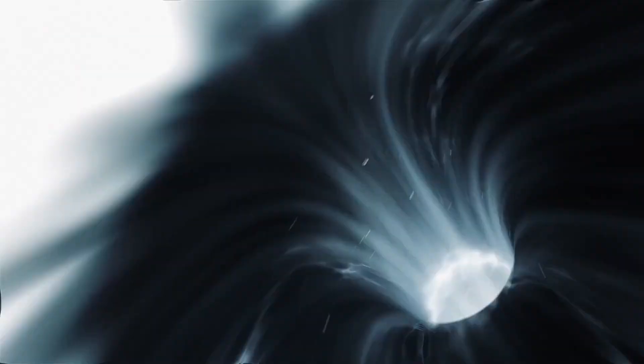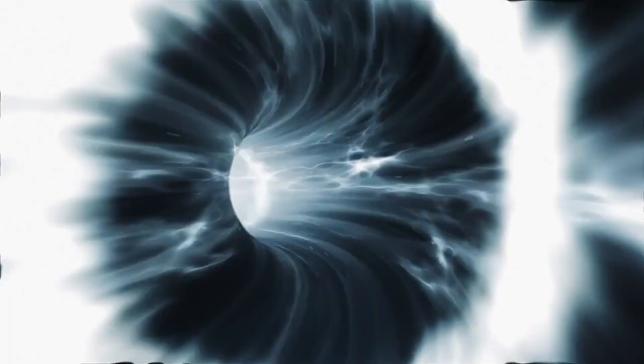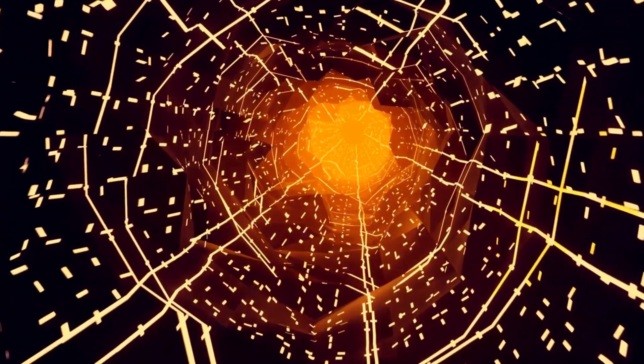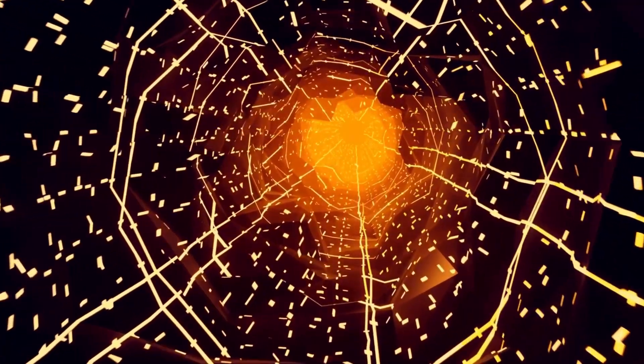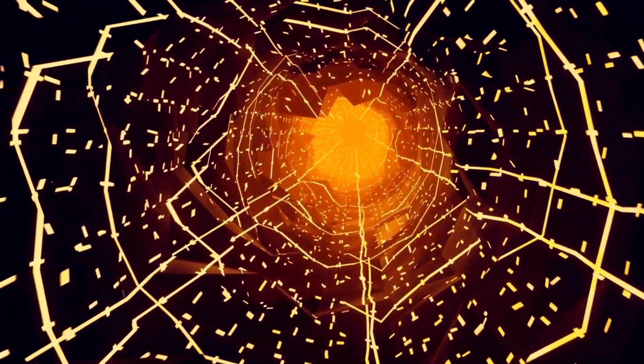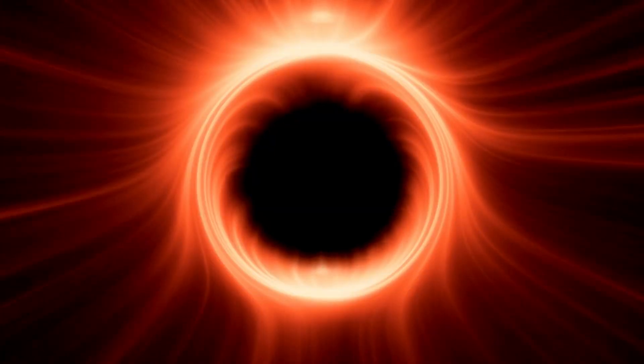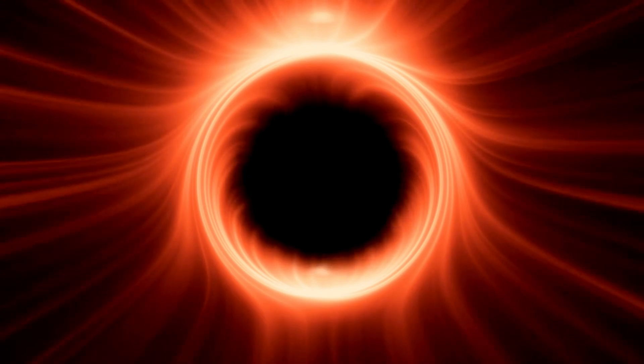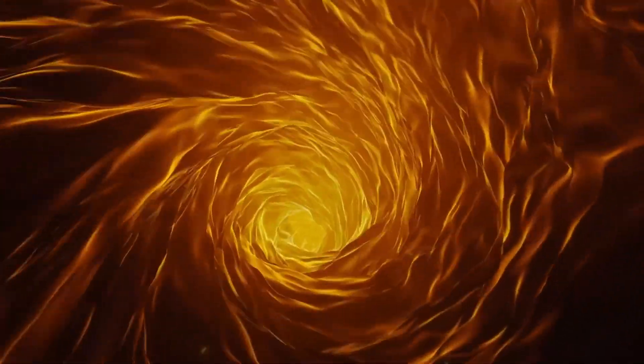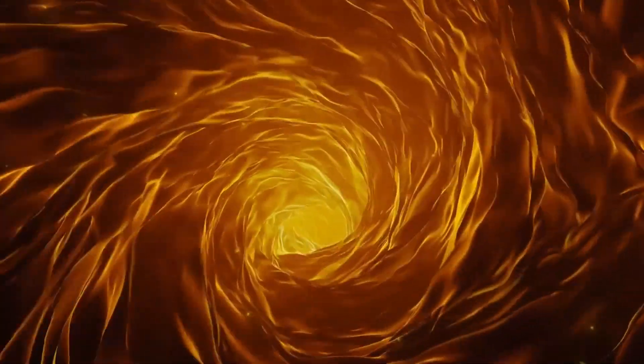The singularity itself, located at the very core of the black hole, represents the second layer. Here, gravity reaches a point of unimaginable intensity, becoming so powerful that nothing, not even light, can escape. To break free from a black hole singularity, an object would need to travel faster than the speed of light, a feat that, according to our current understanding of physics, is impossible.